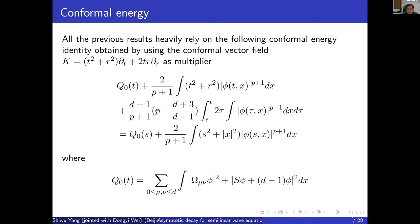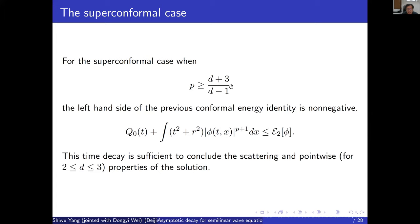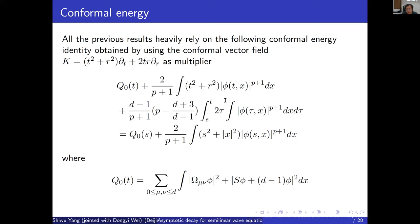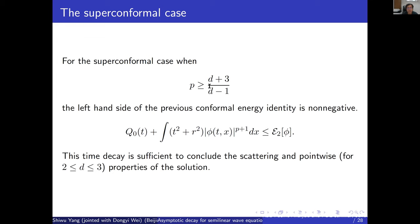When p exactly equals (d+3)/(d-1), this coefficient vanishes, giving conservation of a weighted energy. This power (d+3)/(d-1) is exactly the conformal invariant power, meaning if you do a conformal transformation the equation is invariant, which is why you have this conservation. When p is bigger than this conformal power — the super-conformal case — you can easily conclude the conformal energy is uniformly bounded and derive decay of the potential energy.